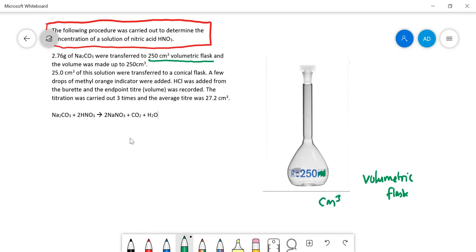We don't use mils, we always use centimeters cubed. You can see there's a little mark there, a little ground glass mark, and what you need to do is add the liquid until your meniscus is just sitting on top of that mark. Once you've done that, then you've got exactly 250 centimeters cubed in the flask.